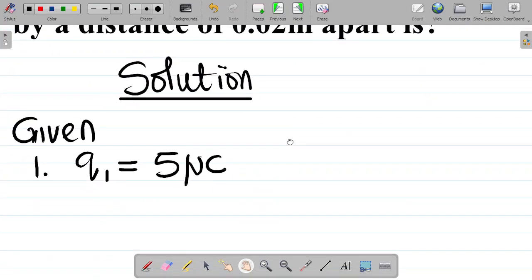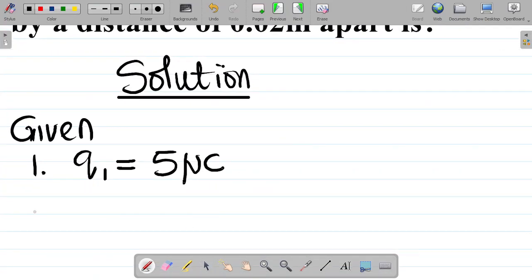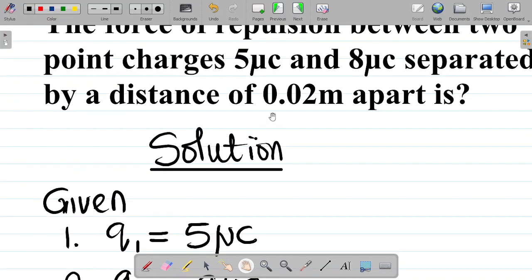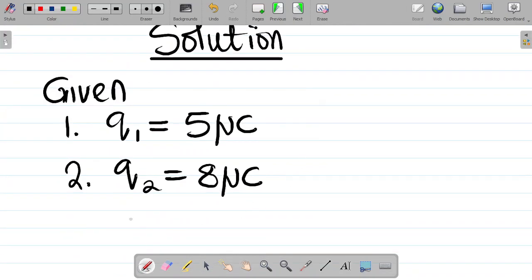Next up, we have 8 microcolumb. So number two, we have a second charge, Q2 is equal to 8 microcolumb. Also, this is separated by a distance of 0.02 meters apart. So number three,